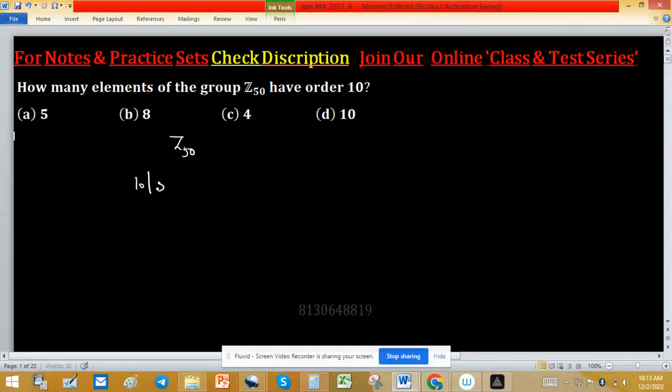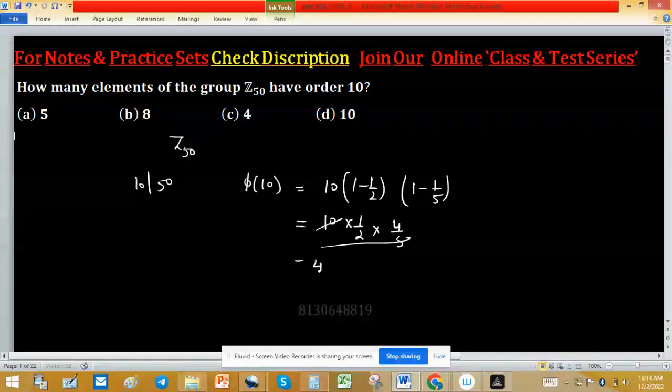As 10 is dividing 50, that's why 10 order elements will exist but how many you can find easily with the help of φ(10). And the value of φ(10) is 10 into 1 minus 1 upon 2 into 1 minus 1 upon 5. So value of this one, 10 into 1 by 2 into 4 by 5, 10 cancel out by 10, so value is 4.